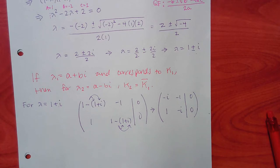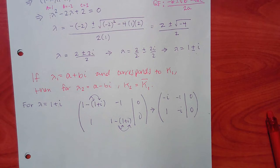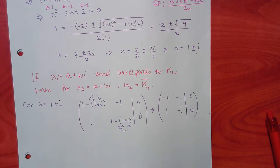The three row operations are: multiply any row by a nonzero number, multiply a row by a nonzero number and add it to another row, or interchange (swap) two rows. If we already have a 1 where we want it, just swap the rows.